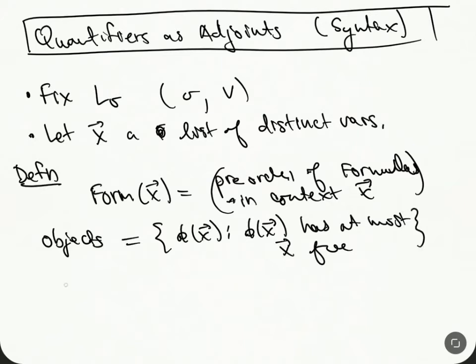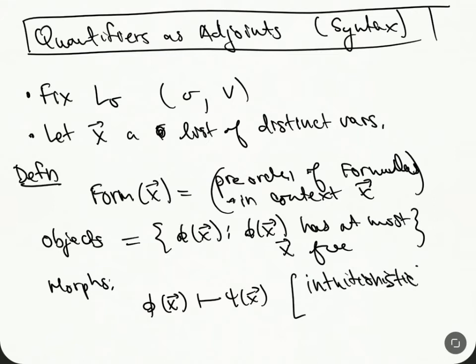And then the morphisms, so this is going to be phi here to psi of X. And so we're going to take this to be intuitionistic. So we're going to assume that there's going to be a morphism when one can be deduced from the other using the intuitionistic fragment of logic.